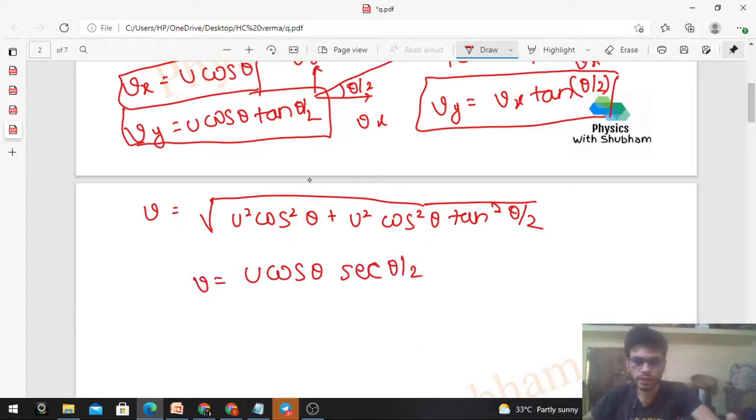Fine. So we have V. What else to calculate? Alpha. Alpha is tan⁻¹(vy/vx). Check: vy/vx is tan(θ/2), right? So tan⁻¹(tan(θ/2)).